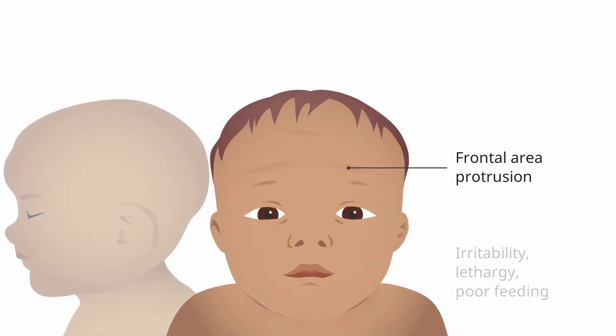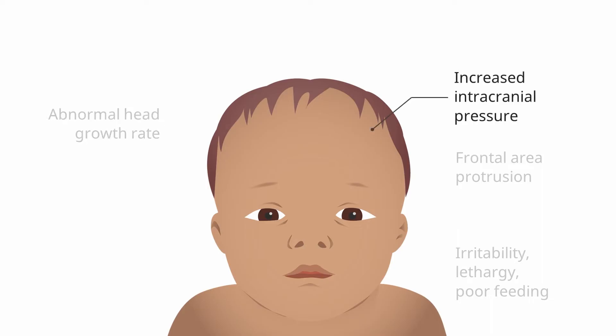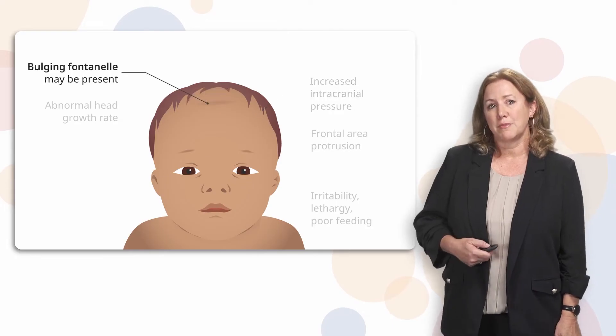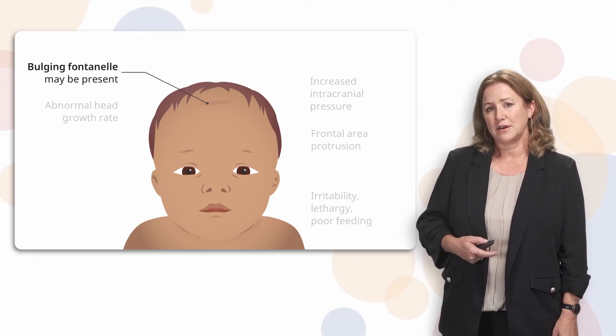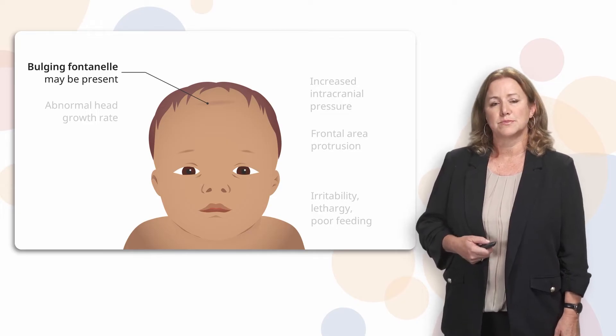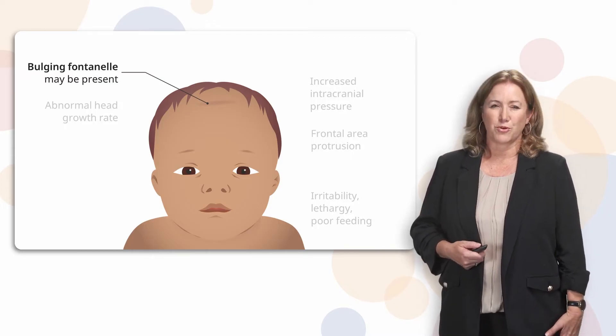The frontal area of the head will eventually start protruding — a term for this is called bossing. The head would grow at an abnormal rate if the hydrocephalus was not treated. As this happens, intracranial pressure will increase within the brain. A bulging fontanelle may be present with or without an enlarged head. The bulging fontanelle results from the hydrocephalus causing increased pressure in the brain. Sometimes a fontanelle is just slightly bulging or more tense.